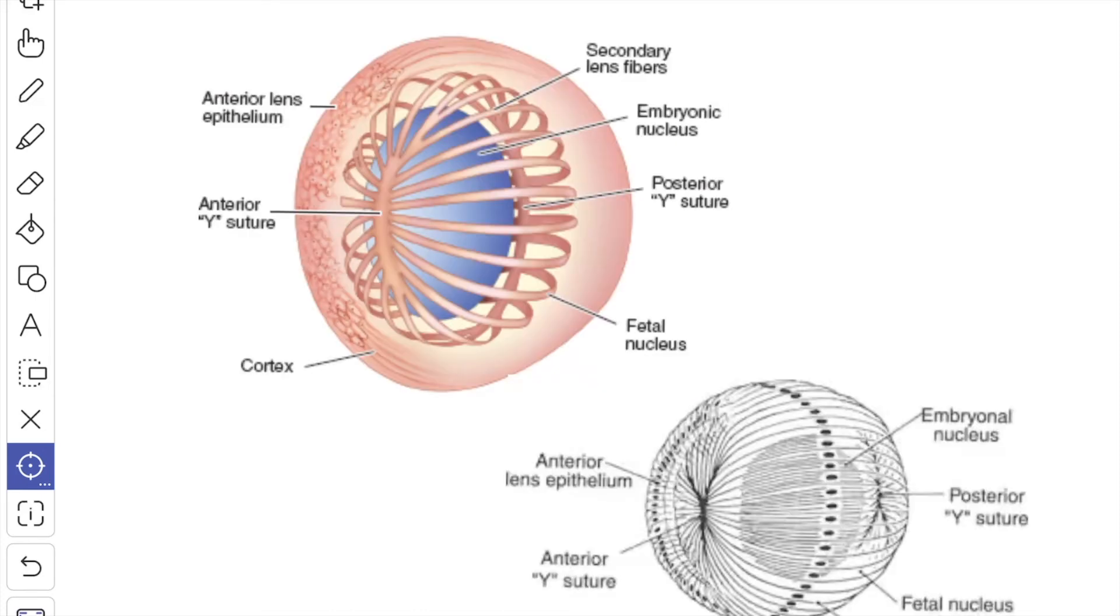The primary lens fibers that grow posteriorly are arranged in sheets which are expressed on both surfaces as Y-shaped sutures. The anterior Y is upright and the posterior one is inverted. The secondary lens fibers extend in a curved pattern from the suture of the anterior surface to the posterior surface.